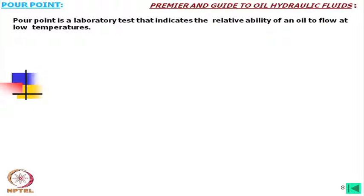Pour point is a laboratory test that indicates the relative ability of an oil to flow at low temperatures. It is determined by taking some oil in a beaker, cooling it down, and then trying to pour that oil into another container. The temperature at which the oil can no longer be poured is the pour point. This is important mainly where operations are held at very cold temperatures — for example, in European or northern countries. For those applications we need to take oil with a higher pour point.